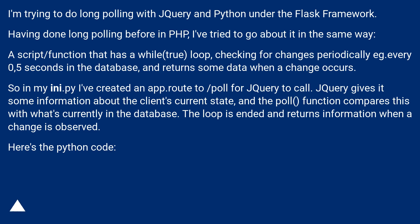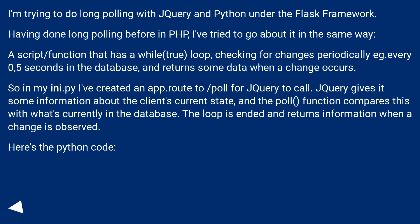In myApp.py, I've created an app route slash poll for jQuery to call. jQuery gives it some information about the client's current state, and the poll function compares this with what's currently in the database. The loop is ended and returns information when a change is observed.